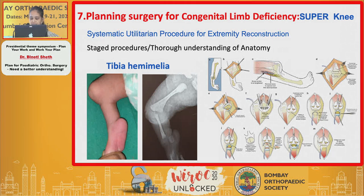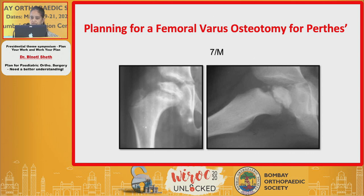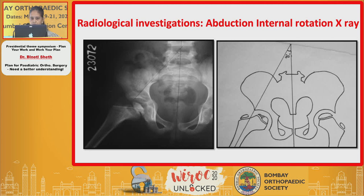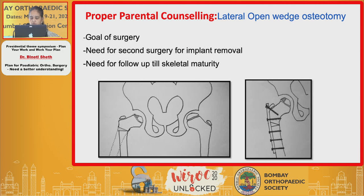Using these principles, here is how I plan a femoral varus osteotomy for a case of Perthes' disease in a seven-year-old male. He has good hip range of motion; the X-ray shows early fragmentation and lateral classification with early extrusion — a correct candidate. My surgical dose would be a containment surgery: varus derotation osteotomy (VDRO). I do an abduction internal rotation view to confirm the magnitude of osteotomy, discuss the plan with parents, and explain the goal, need for second surgery for implant removal, and need to follow up till skeletal maturity.